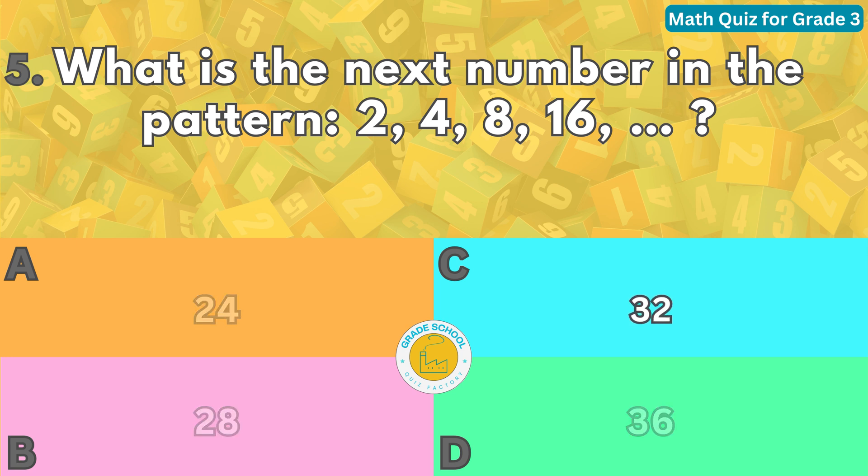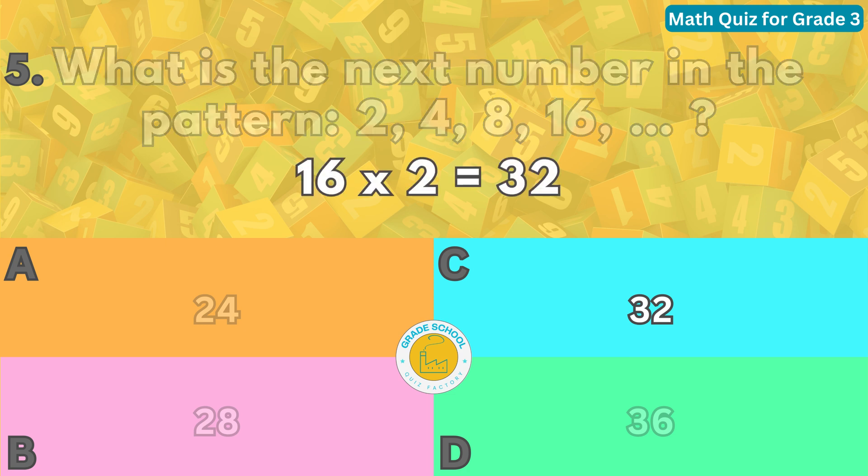The pattern follows a rule where each number is double the previous number. Therefore, the next number is 16 times 2 equals 32.